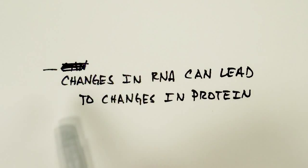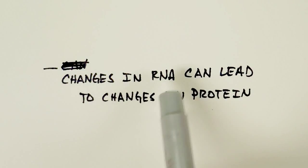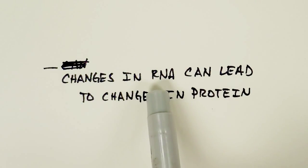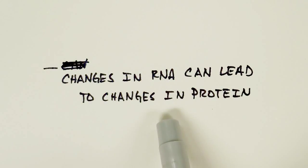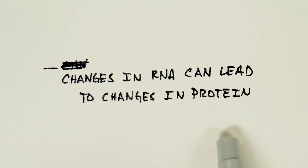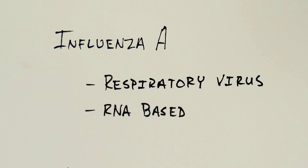What's important about the central dogma is the idea that changes in the RNA can ultimately lead to changes in the protein. And those changes in the protein have the ability to change the shape of the protein, thereby possibly changing the actual function of the protein.